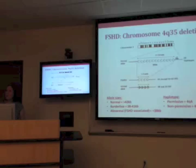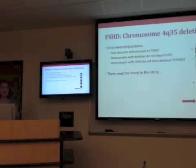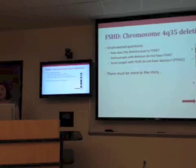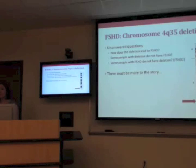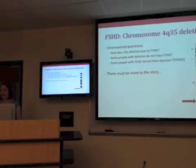Usually when we think of genetic disorders, we think: you have a mutation in a gene, the gene doesn't work, therefore you have a disease. But in FSH we're not missing a gene, so it was not clear how this was causing a problem. Unanswered questions included: how does this deletion ultimately lead to FSH? Why do some people with a deletion not have FSH? And why do some people with FSH not have a deletion? A group labeled FSHD2 clearly has FSH based on all their symptoms but no deletion — so there must be more to the story, and over the next 20 years people worked very hard to figure out those answers.